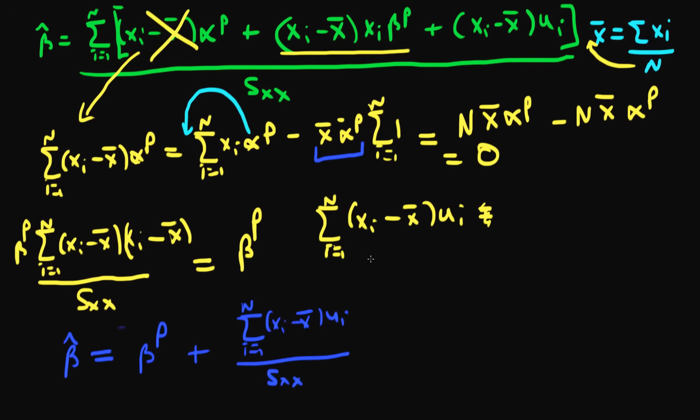So remember what we're trying to do, we're trying to prove that a least squared estimator of the population parameter beta is unbiased. So to prove unbiasedness, we have to take expectations. So taking the expectations of both sides.